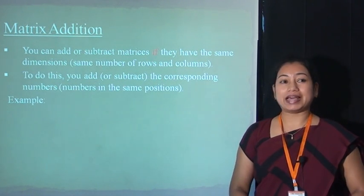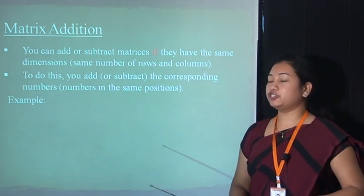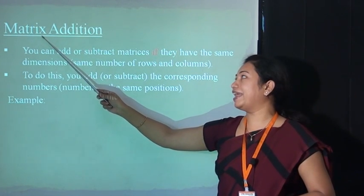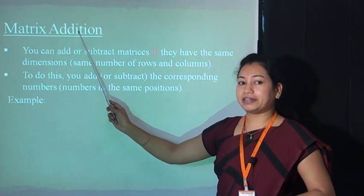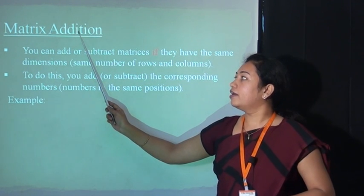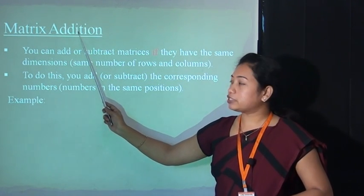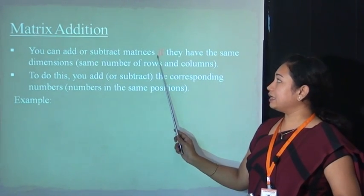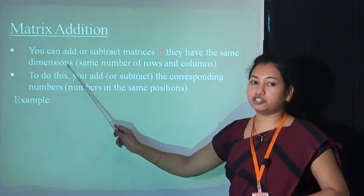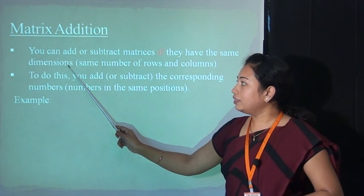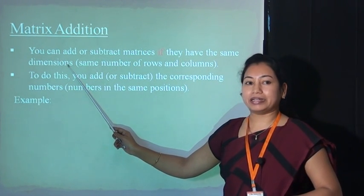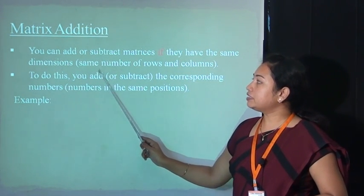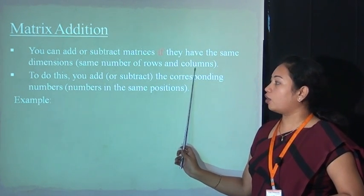Let's start with matrix addition. A matrix is nothing but an arrangement of elements. Matrix addition means adding corresponding elements of the matrices. You can add or subtract matrices if they have the same dimensions — that means all matrices have the same order, whether 2×2, 2×3, or 3×3 — the same number of rows and columns.